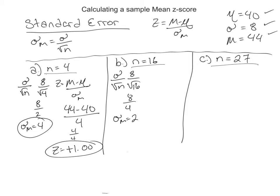We then put that into our z formula. Mean minus mu divided by this. It's going to be 2 this time. So mean is 44 minus 40. In this case, divided by 2. 4 divided by 2. So we get a z-score. Look how much bigger our z-score is. Isn't that crazy? Still positive 2.0.